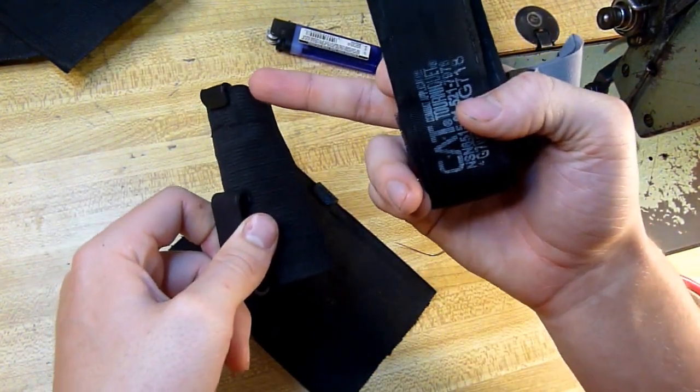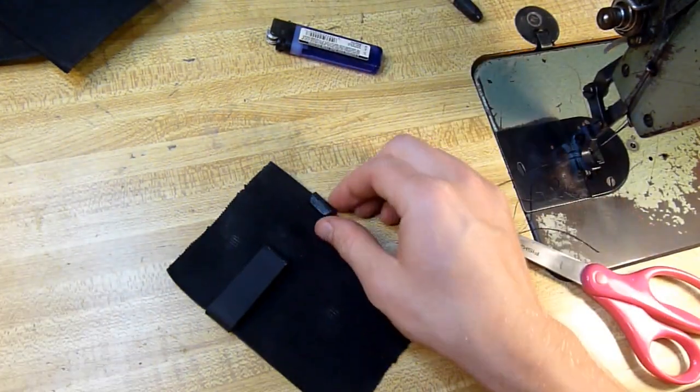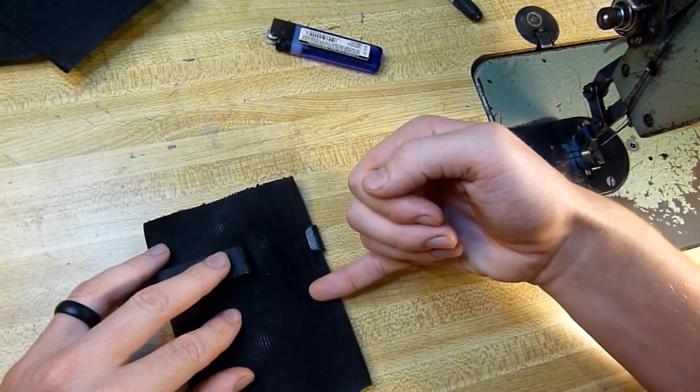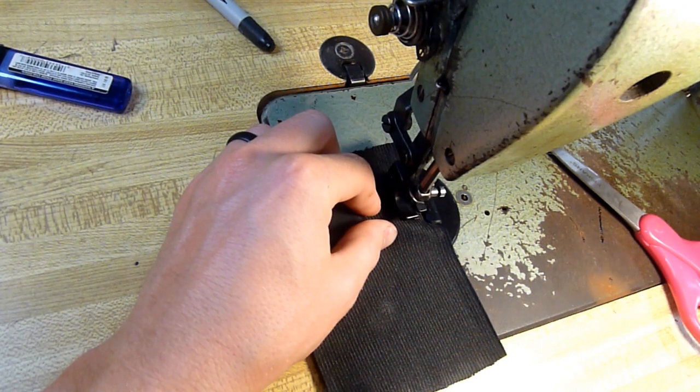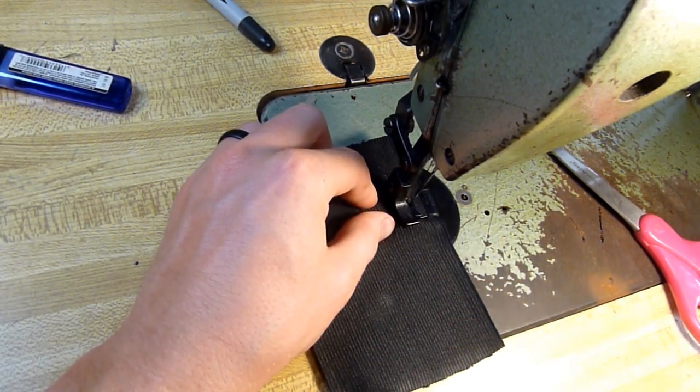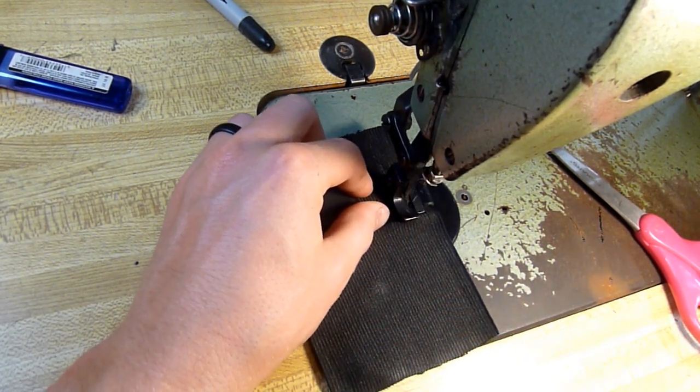This is basically going to keep the elastic from pulling up whenever you remove your tourniquet from the holder. Otherwise all that would just come up towards the top and bunch up. So you'll do a little back stitch there, come across, and do a little back stitch right there to lock everything off. You can see even with my heavy-duty sewing machine, I'm just walking it through really slow by hand just to make sure I don't break a needle because this is some thick kydex.